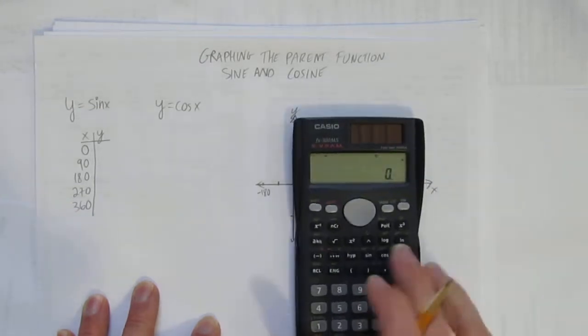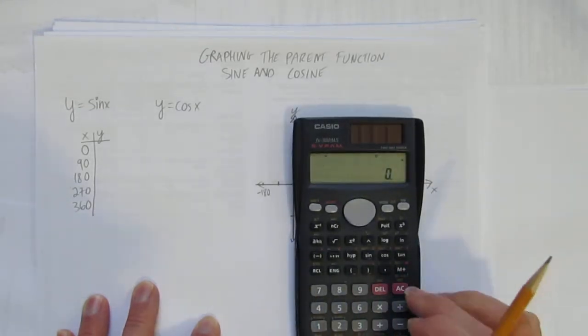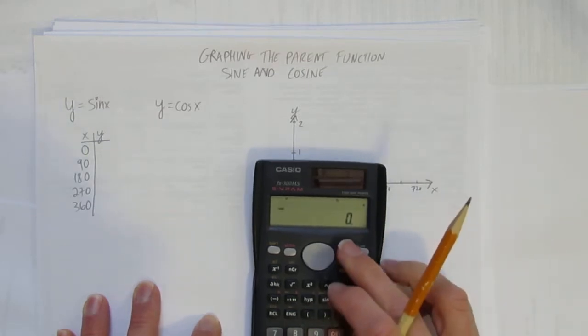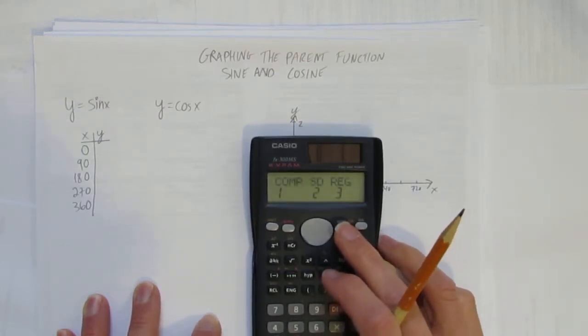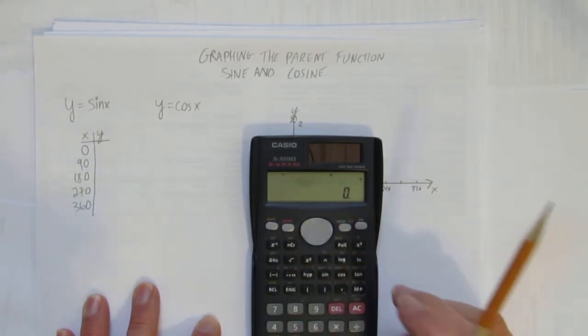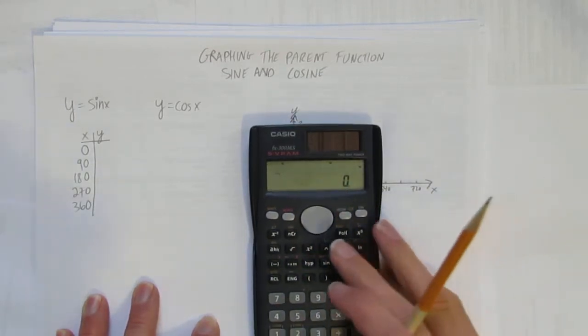When you take out your calculator, we're going to calculate the y values now. Make sure your calculator is in degrees. Mine isn't. Depends on your calculator. Mine, you have to hit mode a couple times, and now choose one for degrees, and there's a little d here now saying it's in degrees.